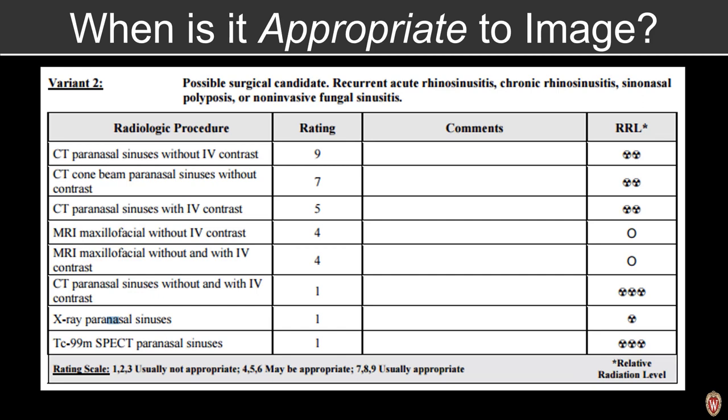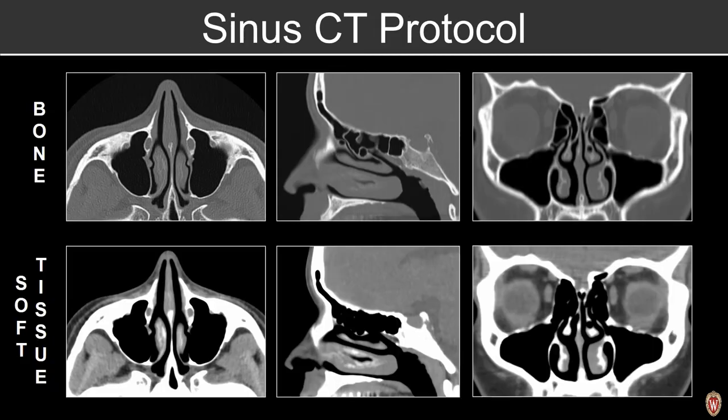Most often, we're going to be evaluating patients presenting with chronic symptoms or recurrent acute symptoms, and in these patients we're going to be evaluating them with a CT scan without contrast. Here, we're going to be looking for anatomic compromise of the drainage pathway. Our standard protocol includes bone windows in the axial, sagittal, and coronal planes, as well as additional soft tissue windows in those three planes.